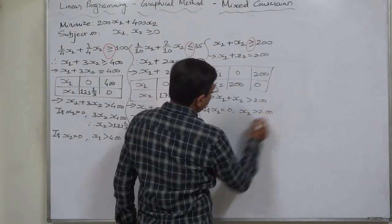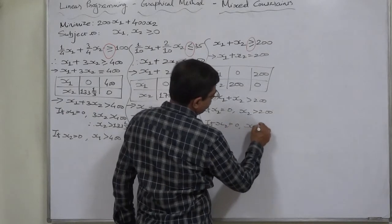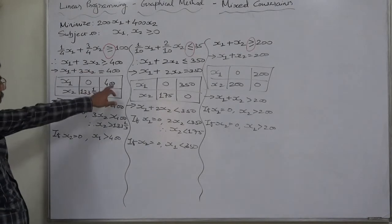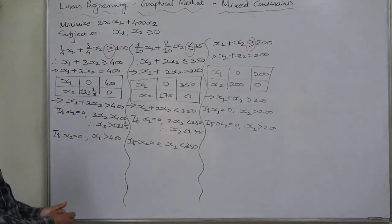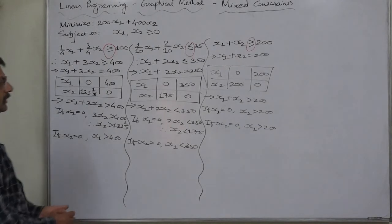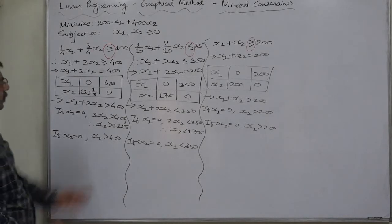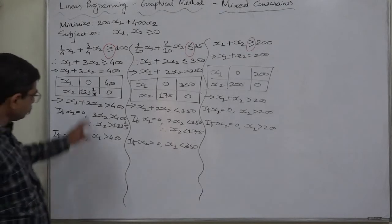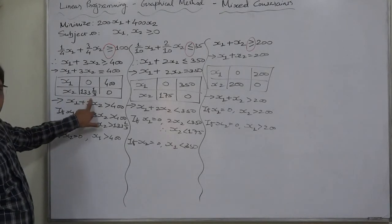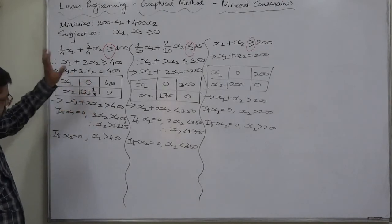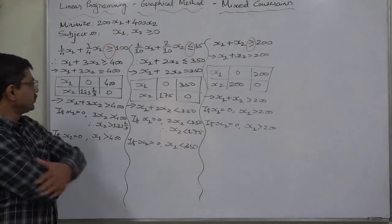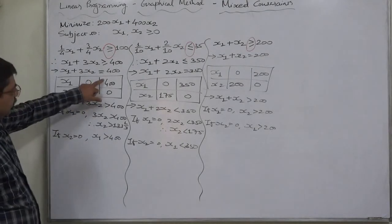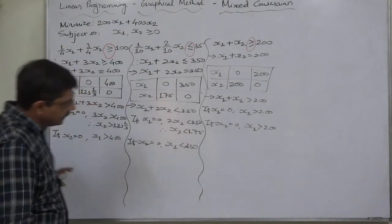There are two important points to note. The values are quite large, so we have to adjust the scale accordingly. All these values except 133 and one-third are multiples of 25, so we can take a scale of 1 centimeter equals 25 units on both axes. 400 divided by 25 means we need 16 or more centimeters on the x1 axis.